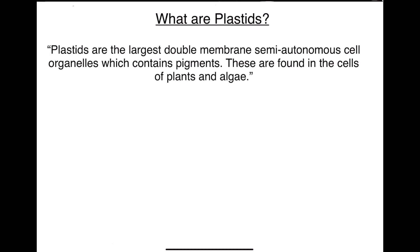If we see the definition of plastids, we can say plastids are the largest double membrane semi-autonomous cell organelles which contain pigments, and these are found in the cells of plants and algae. These are not found in animal cells. Algae are also green colored plant cells which grow in damp areas, so they also have plastids. Plastids are the largest cell organelles and they have double membrane — one outer membrane and one inner membrane.